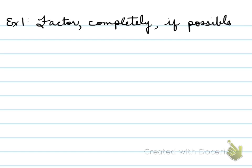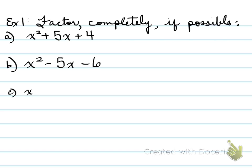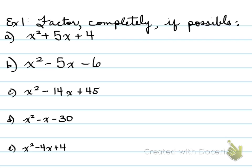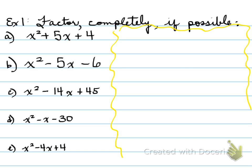We're going to look at lots of different examples. You're asked to factor completely, if possible. So: x squared plus 5x plus 4; x squared minus 5x minus 6; x squared minus 14x plus 45; x squared minus x minus 30; and finally x squared minus 4x plus 4. The answers are what I'm going to be checking, but we're going to have a side with some work. The work will not be marked, but it will definitely help you get the answers. In the first example, it is a simple trinomial because the value next to the x squared is 1, and the product is 4 and the sum is 5.